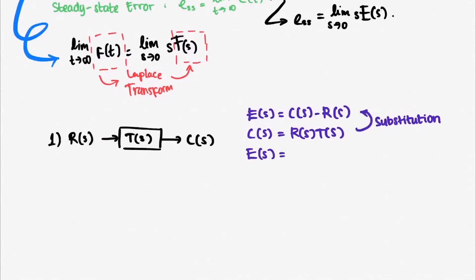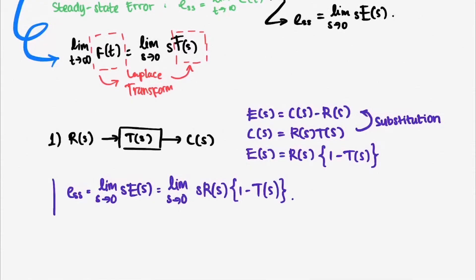Also, we know that C of s is equal to R of s times T of s. Substituting it, we get e of s is equal to R of s times 1 minus T of s. Using our final value theorem, we get the steady-state error to be limit towards 0 of s R of s times 1 minus C of s.